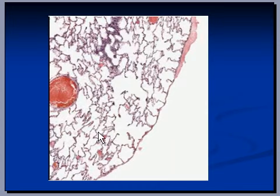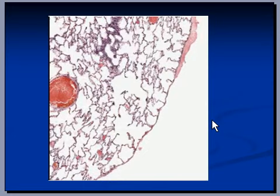This is a blood vessel. This is pleura. We all know that lungs are covered by a double-layered membrane. The outer membrane is known as parietal pleura and the inner membrane is known as visceral pleura.